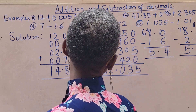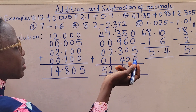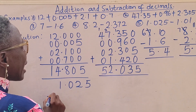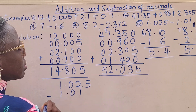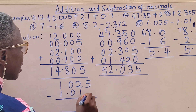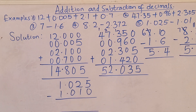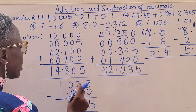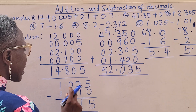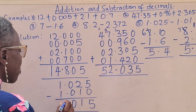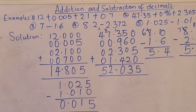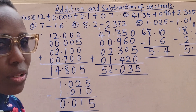I have the third and last example on my board. I'll solve it the same way: 1.025 minus 1.01. Align the decimal points — the method is the same. Once they align, you cannot miss it. 5 take away 0 is 5. 2 take away 1 is 1. 0 take away 0 is 0. Decimal point in its place. 1 take away 1 is 0. Final answer: 0.015.